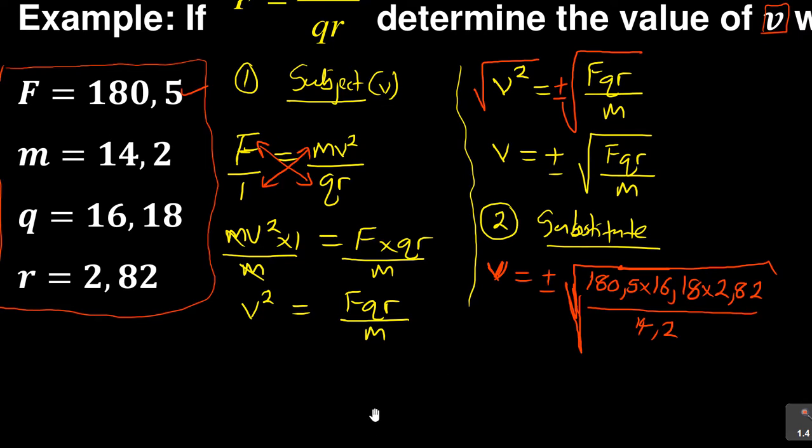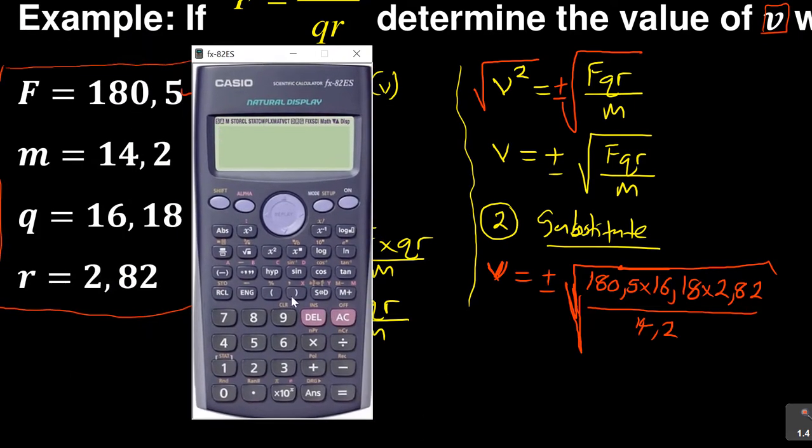Now when you've done that, you will then simplify it. Definitely you need a calculator in that case. So you'll say square root of 180.2 times 16.18 times 2.82, divided by 14.2.